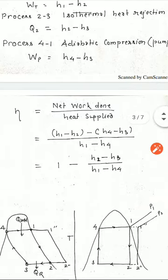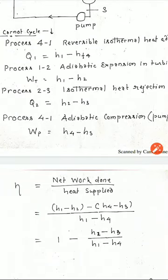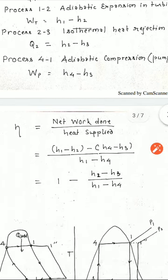So, efficiency as we all know, network done upon heat supplied. So, network done is work done by turbine minus work done upon the pump. So, H1 minus H2 minus H4 minus H3 upon heat supplied which is H1 minus H4. We can write it as 1 minus (H2 minus H3) upon (H1 minus H4).